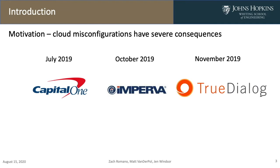In October, Imperva, which is a security vendor, said that hackers stole an administrative AWS private key that was exposed due to a misconfiguration, and then the attackers used that to lift and access a database snapshot of user records. And then in November, researchers revealed that TrueDialog, which is a business SMS solutions provider, had exposed at least 604 gigabytes of data on an unsecured Microsoft Azure database. This included tens of millions of text messages and other private information.